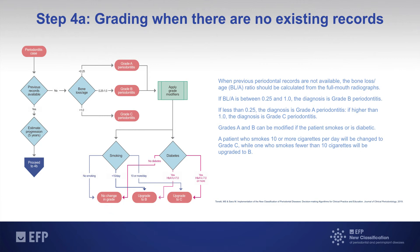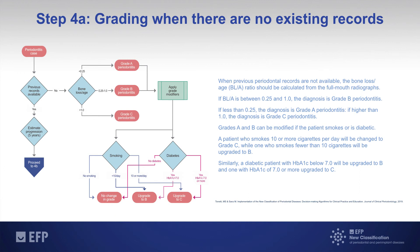Similarly, a diabetic patient with HbA1c levels below 7 will be maintained in grade B or grade A. However, when levels of HbA1c are higher than 10, the grade will be upgraded to C.